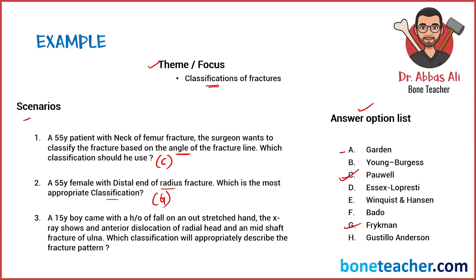The third scenario: a 15-year-old boy came with a history of fall on an outstretched hand. The X-ray shows an anterior dislocation of the radial head and a mid-shaft fracture of the ulna — which classification will appropriately describe the fracture pattern? This describes a Monteggia fracture, which is a fracture-dislocation combination involving a fracture of the shaft of ulna with radial head dislocation. The classification used for Monteggia fracture is Bado classification, so the answer is F.